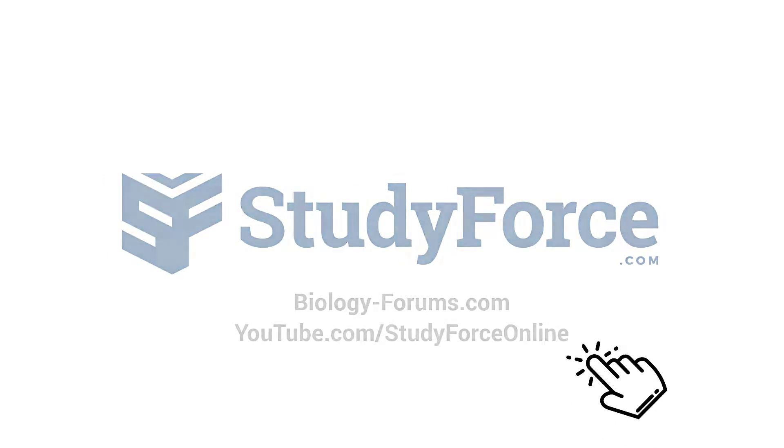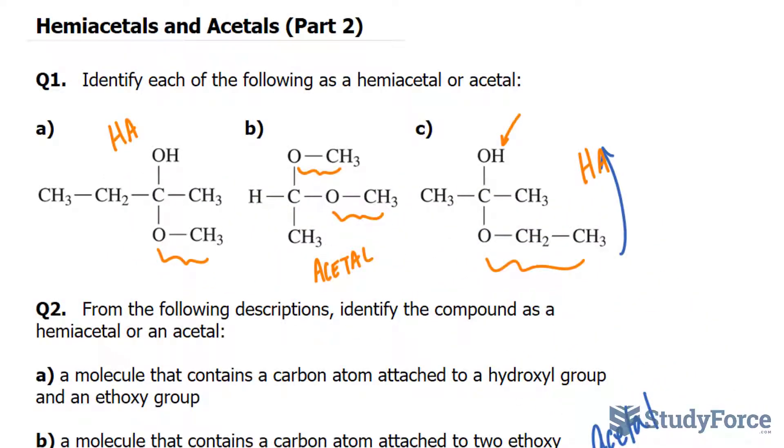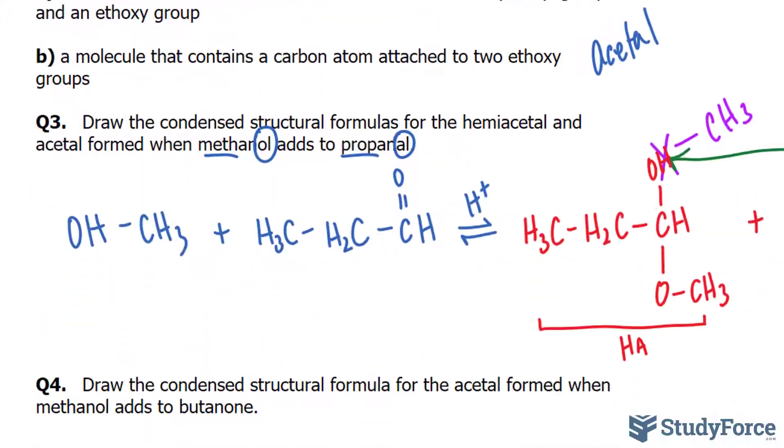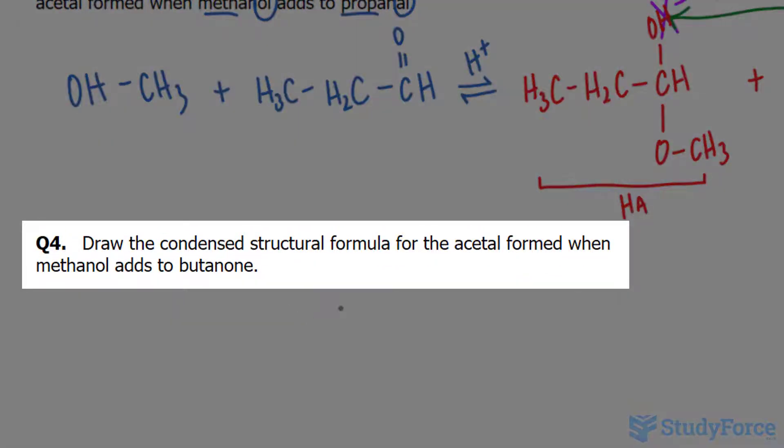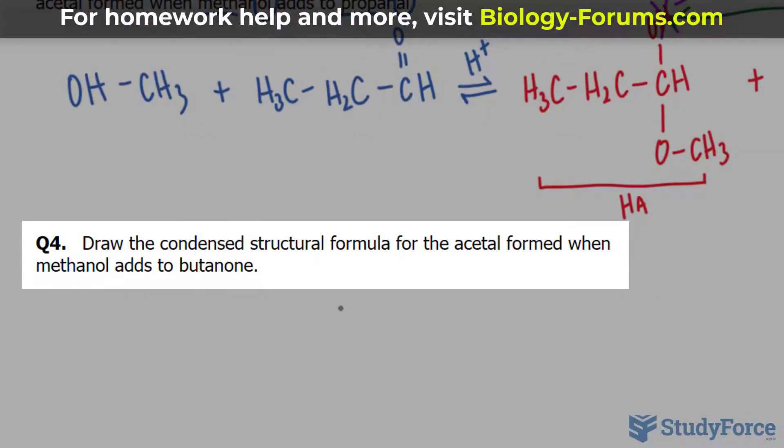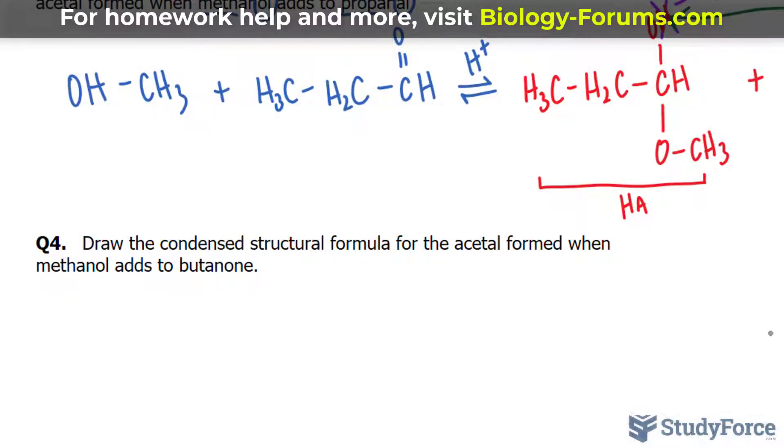Welcome back to part two of this series on hemiacetals and acetals. We ended off answering questions one through three, and we have question four to complete, which reads: draw the condensed structural formula for the acetal formed when methanol adds to butanone.